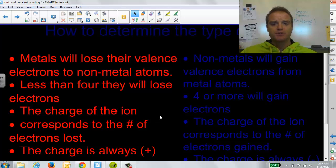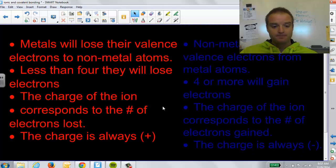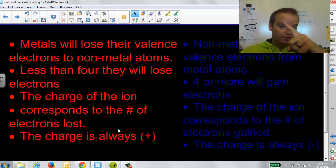How do we determine the type of ion? Different elements do different things. Metals will lose their valence electrons. They tend to have less than four valence electrons. Here's the big one: less than four, they lose their electrons. So, if you have one, two, or three valence electrons, they're going to lose them. The charge of the ion corresponds to the number of lost electrons. If I lose one electron, I have a plus one charge. If I lose two electrons, I have a plus two charge.